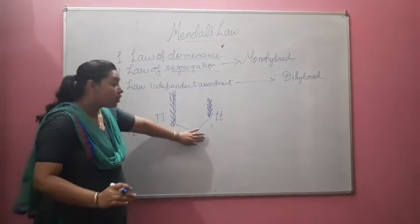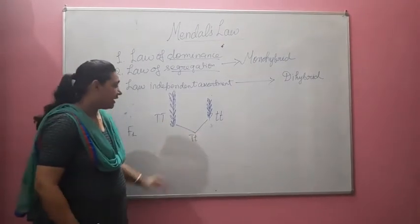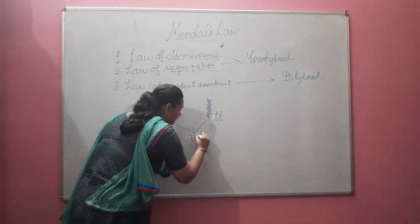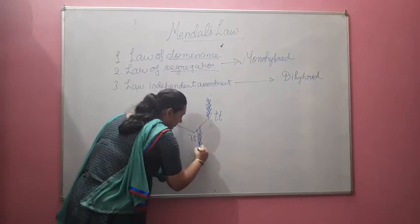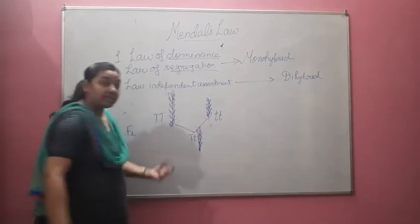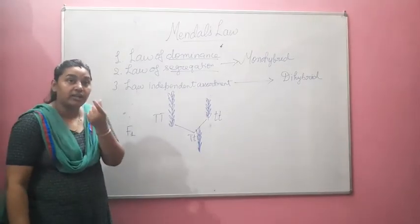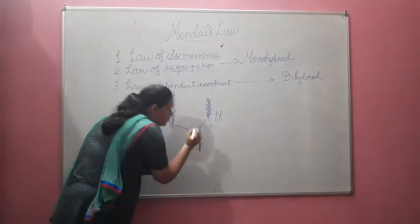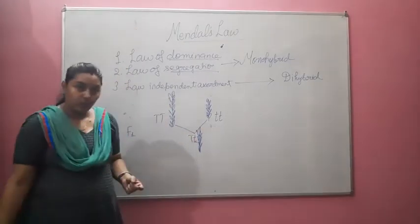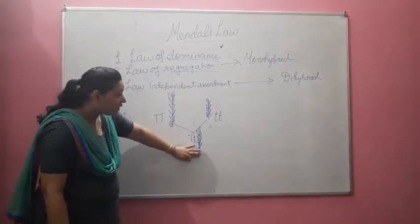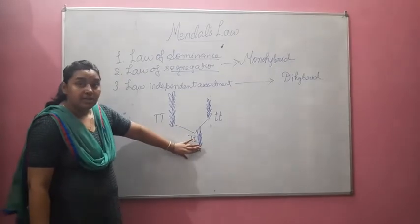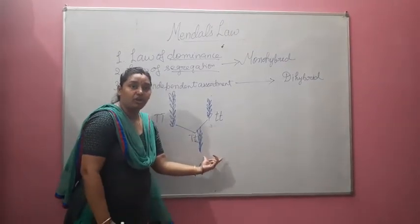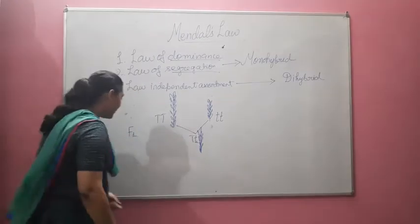But he was not aware that in all these tall F1 plants, there is a hidden character, which is the small t allele. So he got all tall plants. Further, he did self-pollination in those tall plants to obtain the F2 generation.